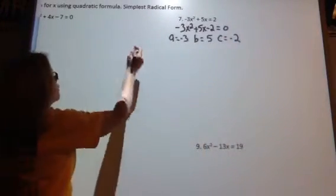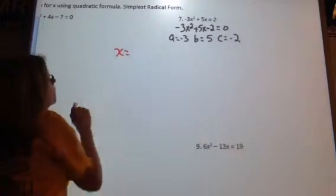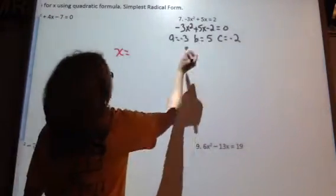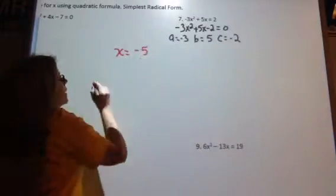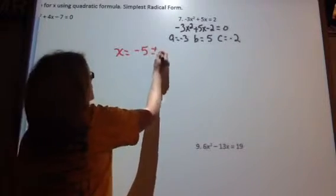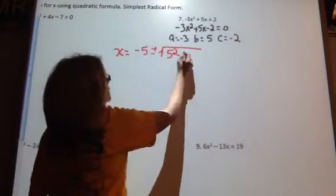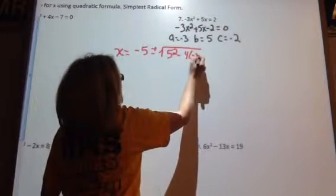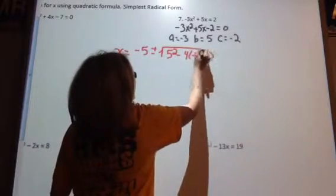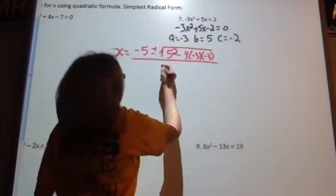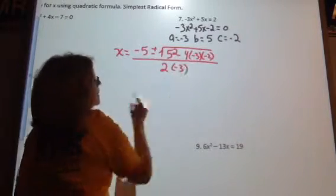Then we're going to substitute into our quadratic formula. So it's the opposite of b. b is 5. Opposite of 5 is negative 5. Plus or minus b squared minus 4 times a times c all over 2 times a.